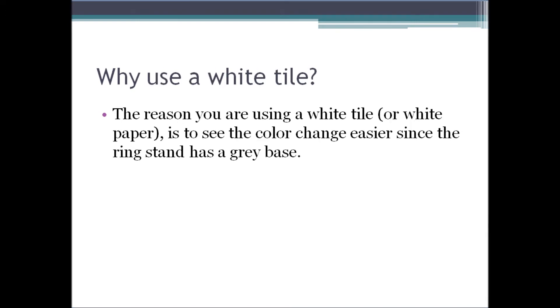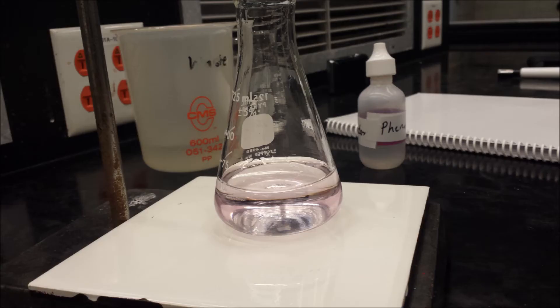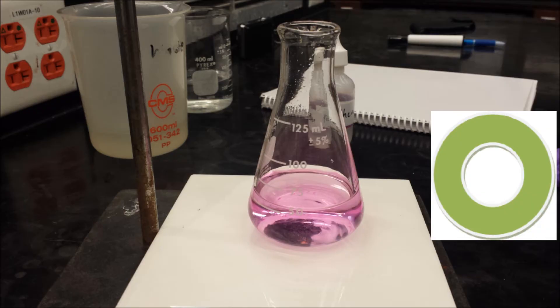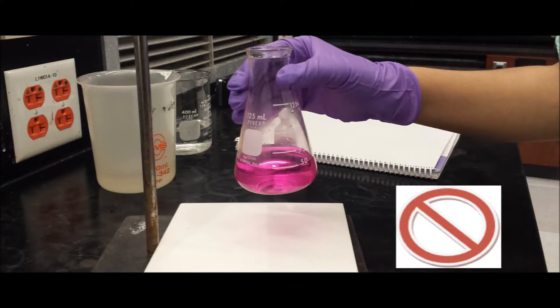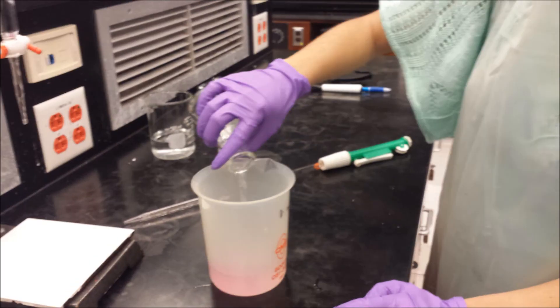The reason why you are using a white tile is to see the color change easier since the ring stand has a gray base. Stop the titrant when the solution is slightly pink. If the pink color does not disappear after 30 seconds of additional swirling, you have reached the endpoint of titration. If you get a dark pink color, a magenta, then you have gone too far and overshot it. Record your final volume of the burette to the nearest 0.01 milliliters and pour your titration mixture into the waste bucket.